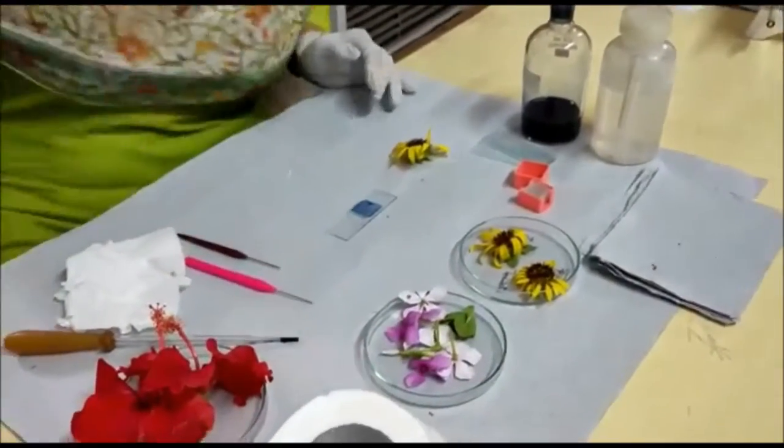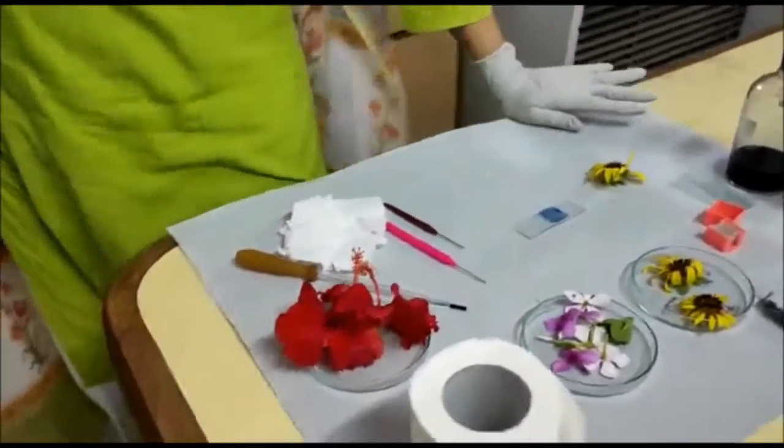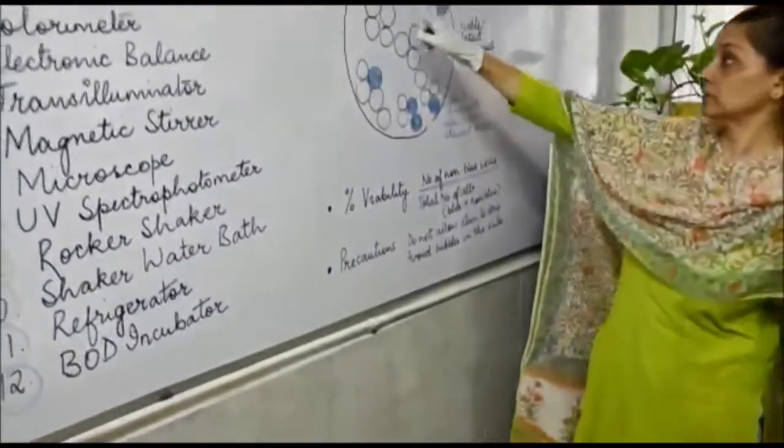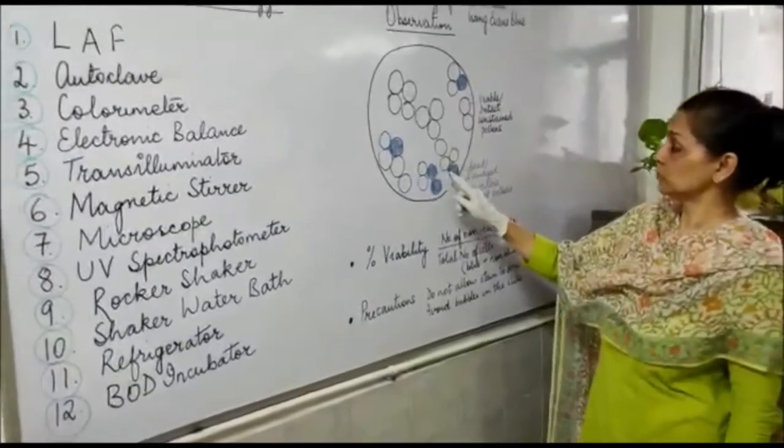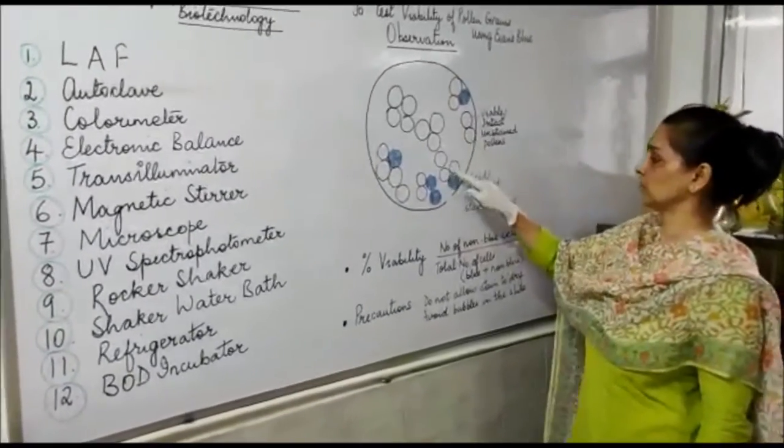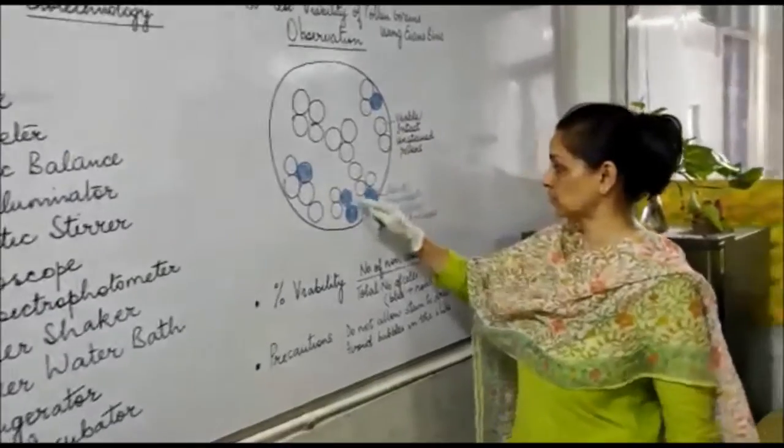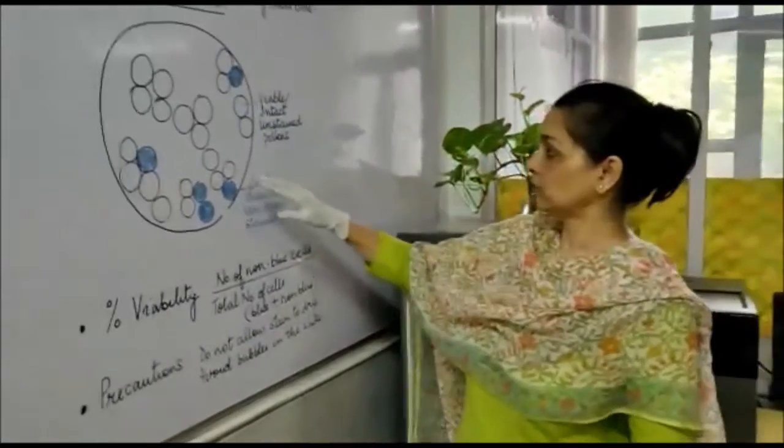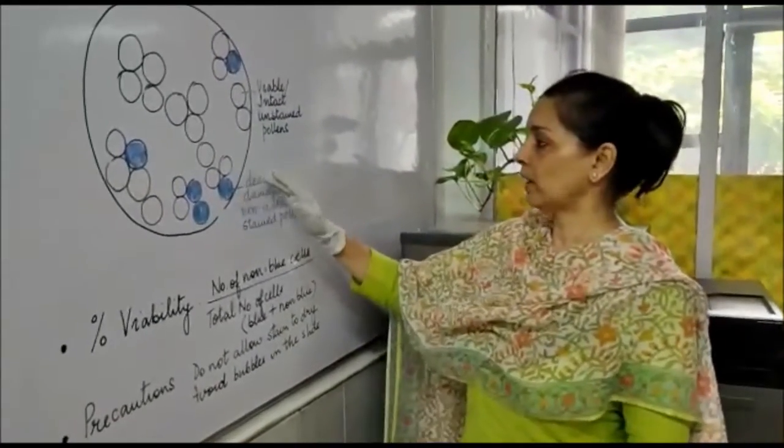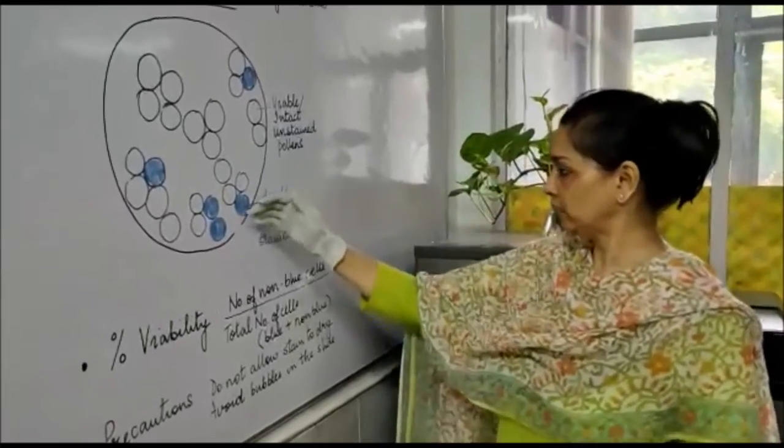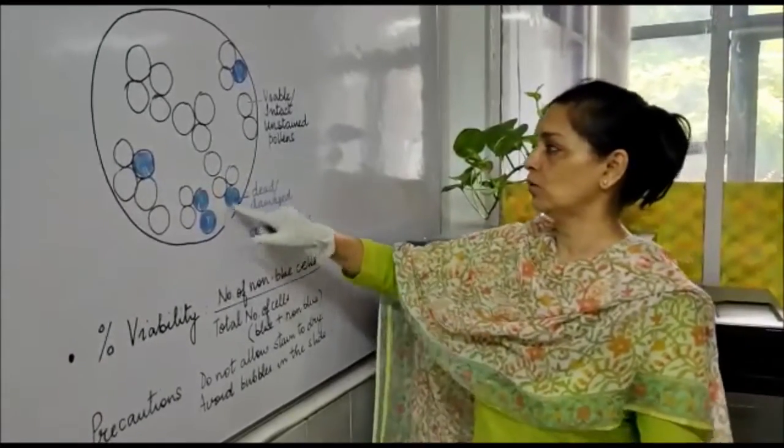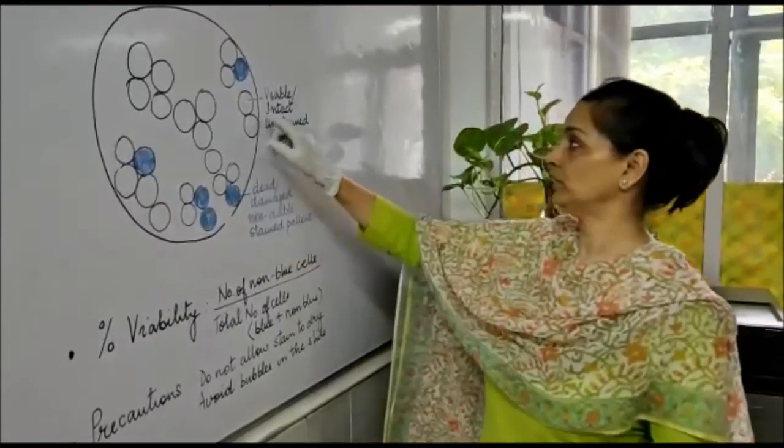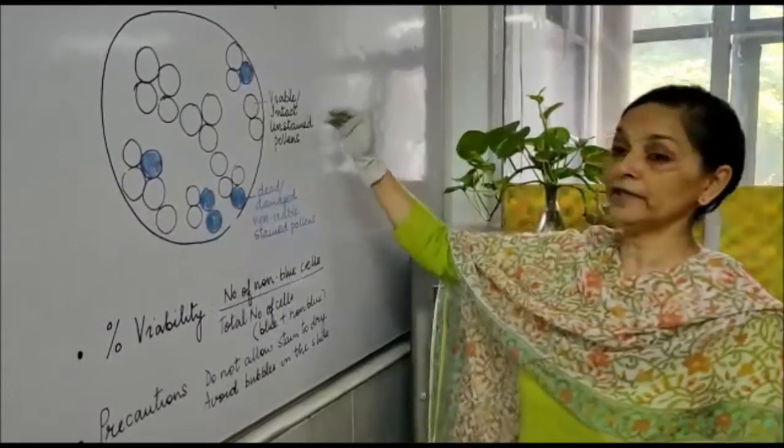What do we see under the microscope? You can see the diagram here showing the types of pollen grains you'll observe. Some pollen grains will appear yellowish or white, while others will be blue. The dead or damaged ones take up the dye and appear blue, while the viable or intact ones remain white or yellowish.